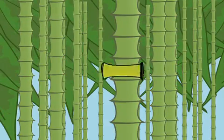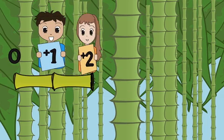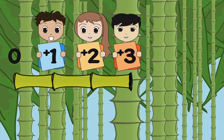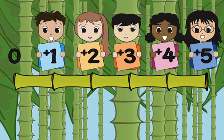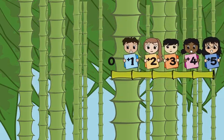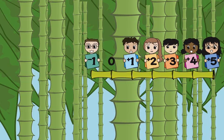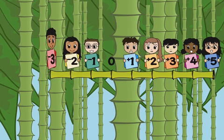The point labeled zero is called the origin. Numbers to the right of zero are greater than zero and are positive numbers. Numbers to the left are less than zero and are negative numbers.